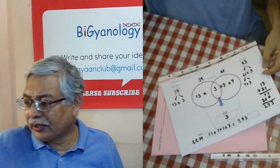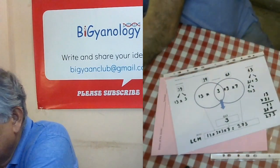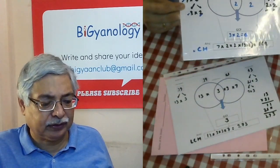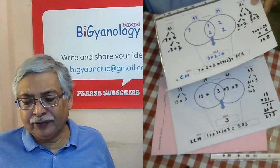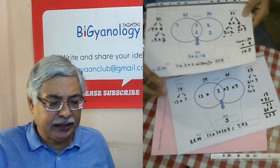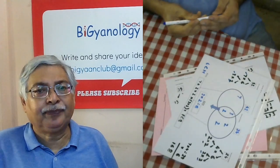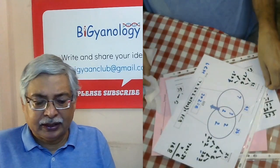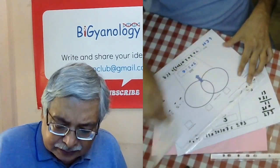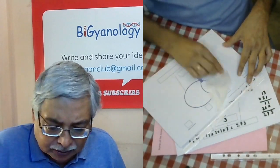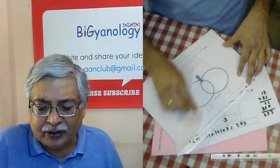Here is another example already done — the LCM and GCF of 42 and 24. You can easily find the LCM or GCF with this Venn diagram. After doing one example, you can tell the students to rub it off and then give them another. This way they use it as a whiteboard.